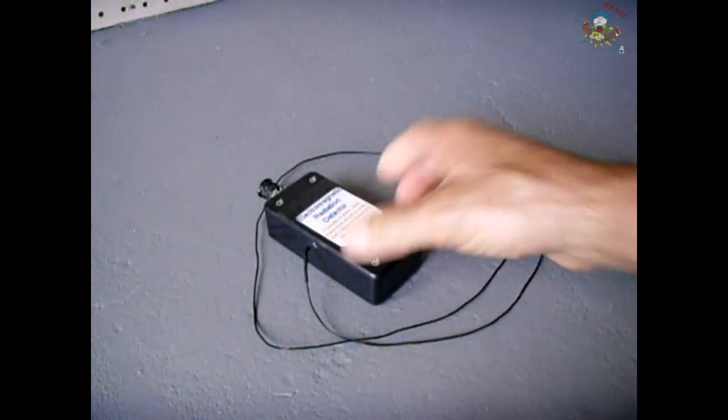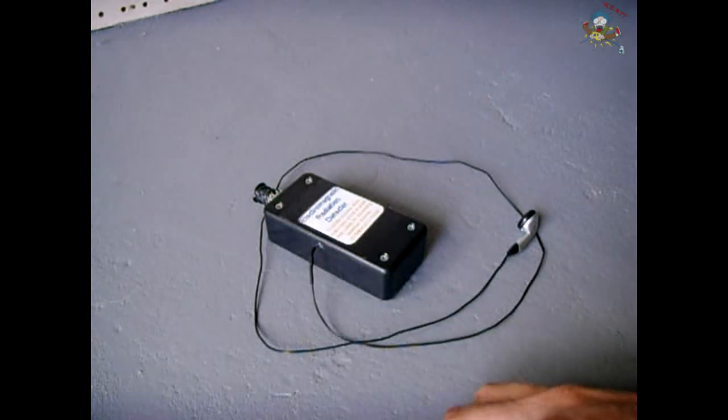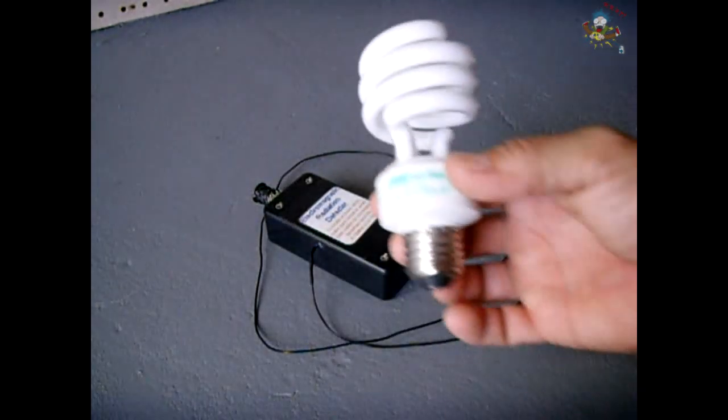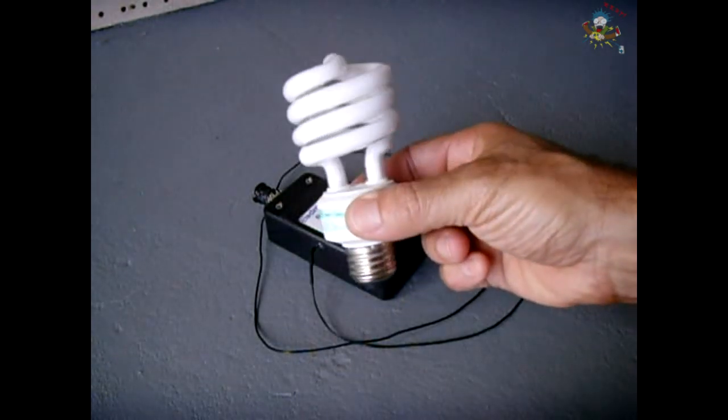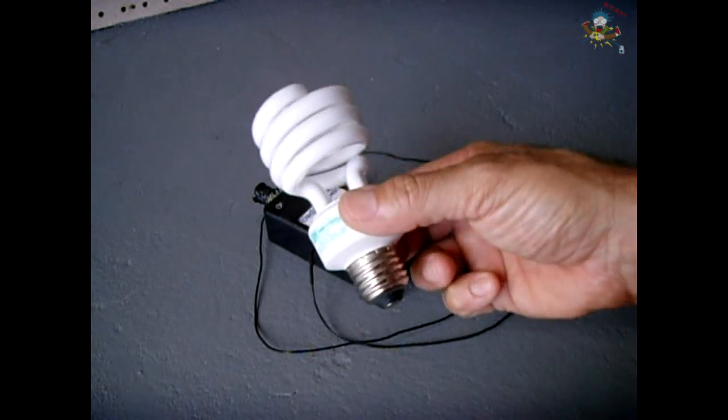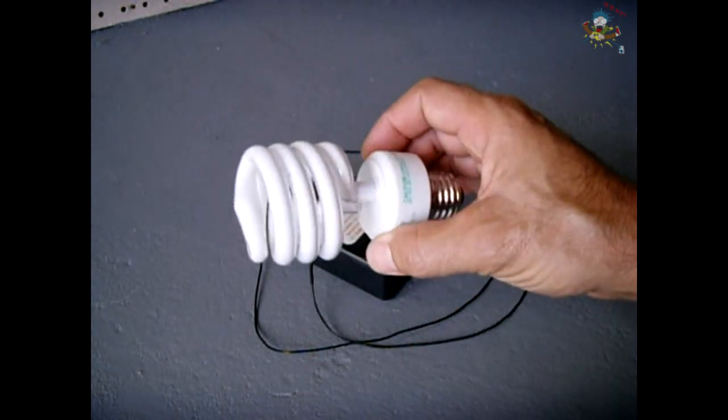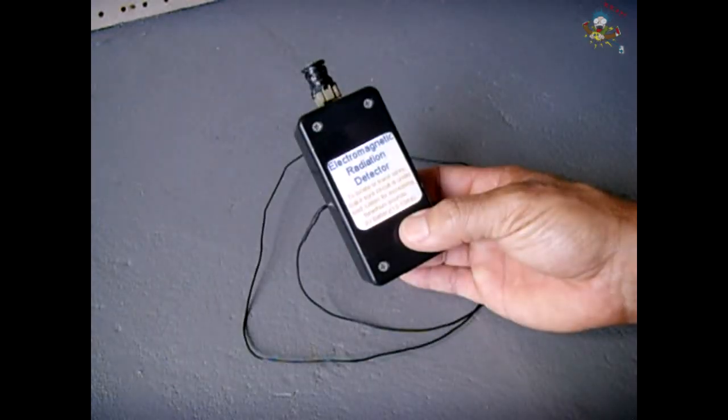If you're using a 240 volt line, just make up a little rig to be able to connect this to one leg of the 220 line to the neutral or the ground and you'll be able to trace that 220 volt line using the compact fluorescent light and this detector. This will also work on PVC pipe.